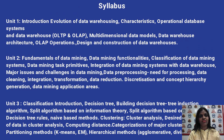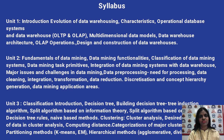Coming toward the syllabus of data warehousing: Unit 1 covers introduction and evolution of data warehousing, consisting of characteristics, operational database systems, and data warehouse. The characteristics of a data warehouse are storage, fast accessibility, denormalization detection, and fast accession. The operational database includes OLTP and OLAP, where OLTP stands for Online Transactional Processing and OLAP stands for Online Analytical Processing. Then we have multidimensional data models, data warehouse architecture with three-tier architecture, different OLAP operations, and design and construction of a data warehouse.